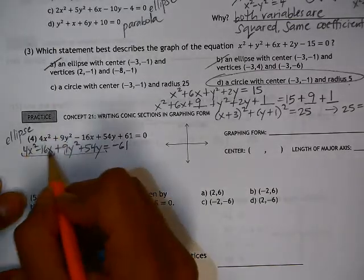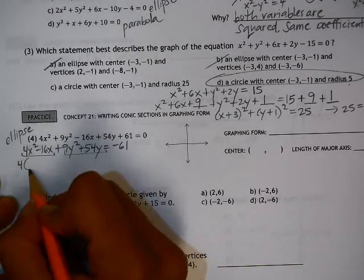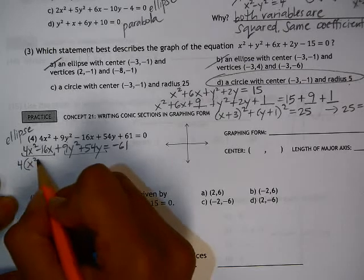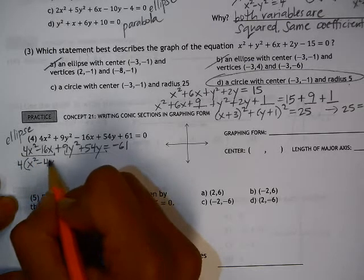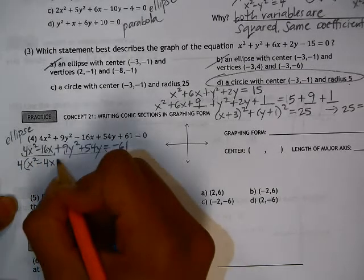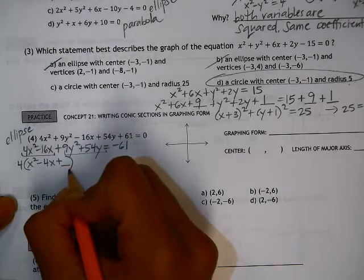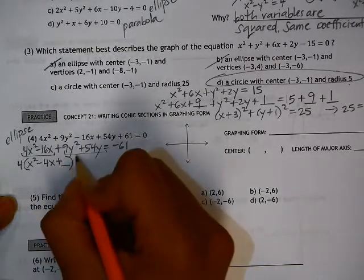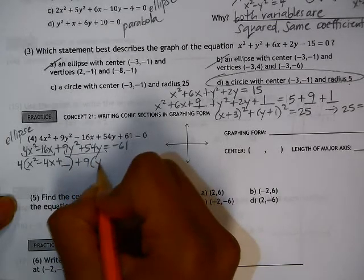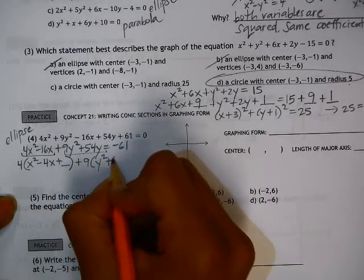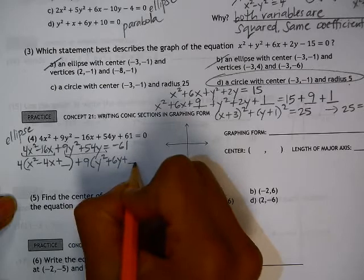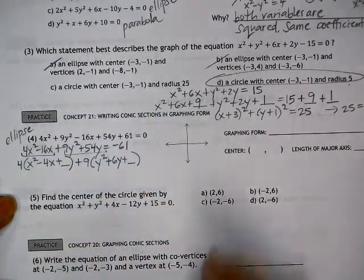So we need to factor out this a value and write down what's left. So we have x squared minus 4x. And we are going to have to complete the square in order to get it in graphing form. So I'm going to put a blank there to complete the square. Here I'm going to factor out the a value of 9, y squared plus 6y plus, and we need to complete the square there as well.